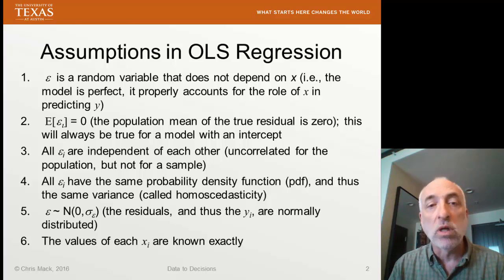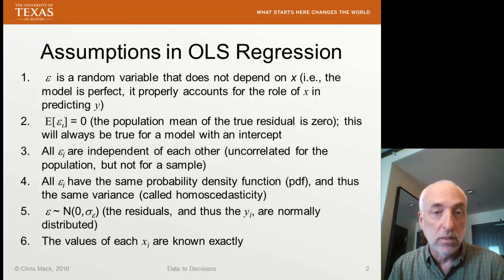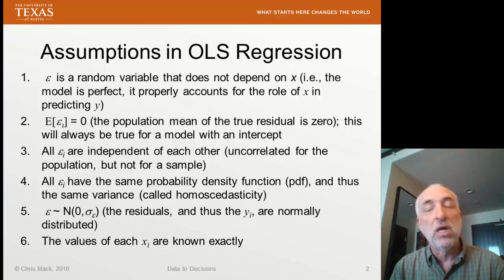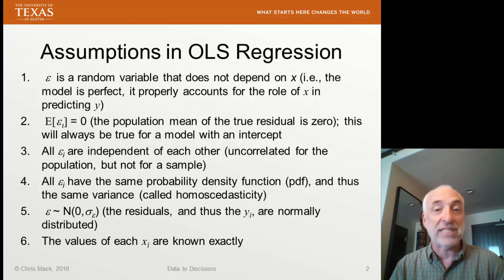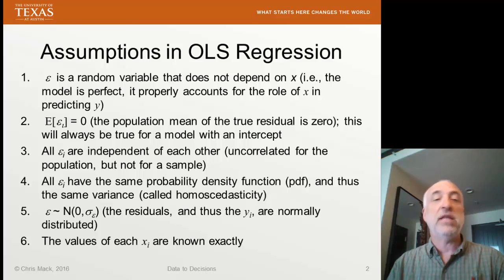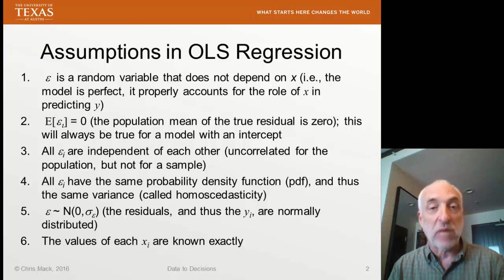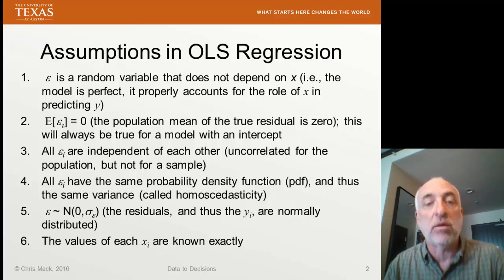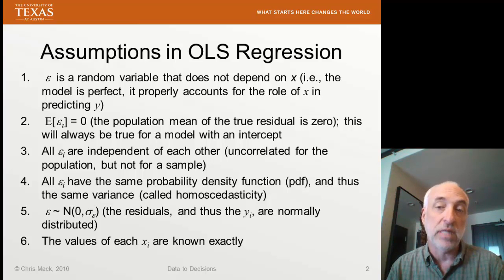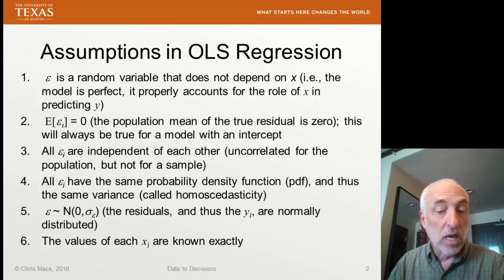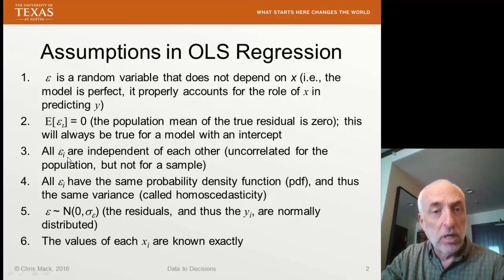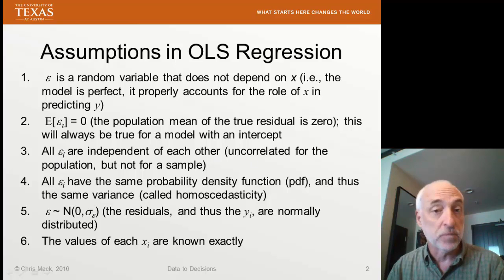Number three: all of the residuals are independent of each other — they're uncorrelated. We're assuming this is true for the population. But as we'll see when working through regression examples, as soon as you have a sample and fit it to a model, the sample residuals E sub i are not independent of each other — that's just the nature of how fitting works in regression. What we're talking about here is the true residuals. We're assuming the true residuals are all independent of each other. If they're correlated, then we have a problem we're going to have to deal with.